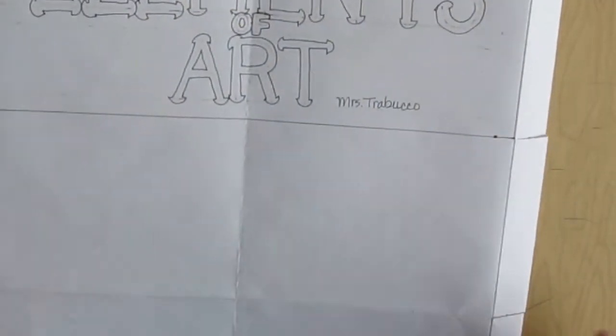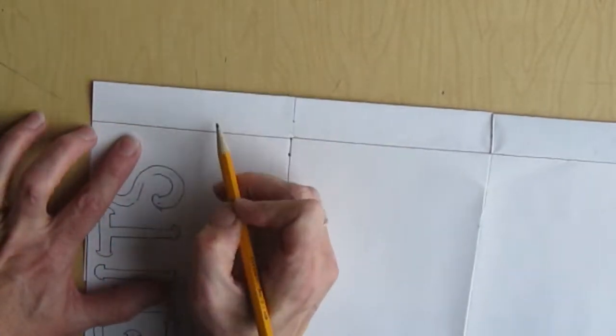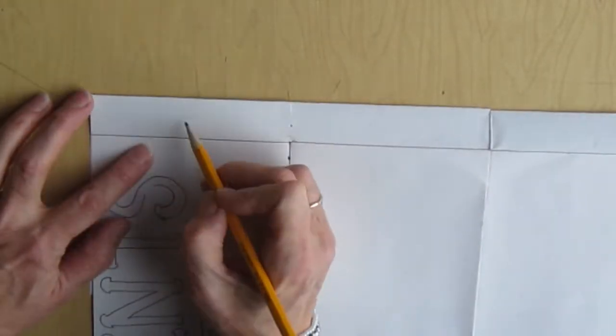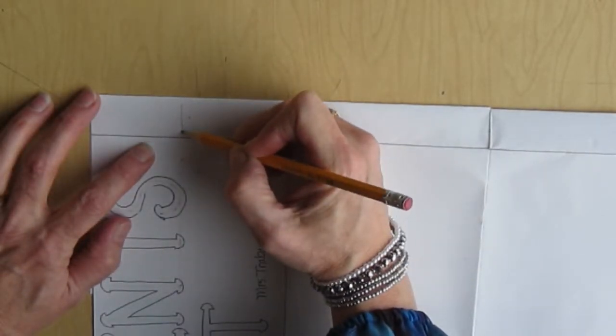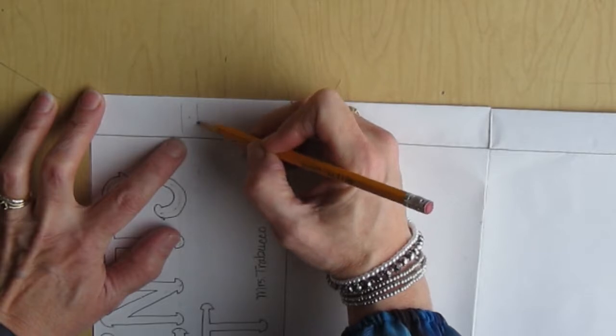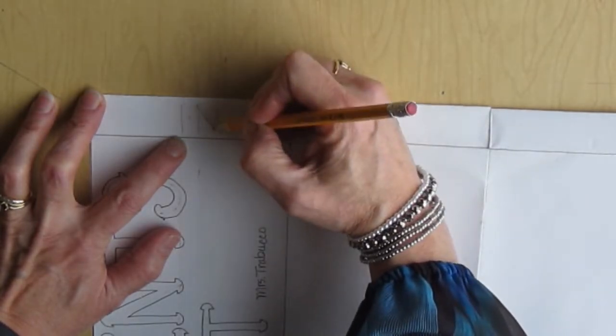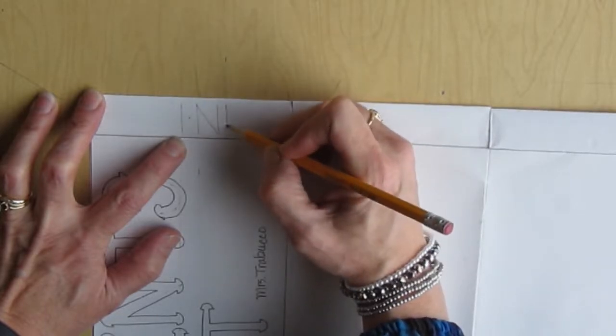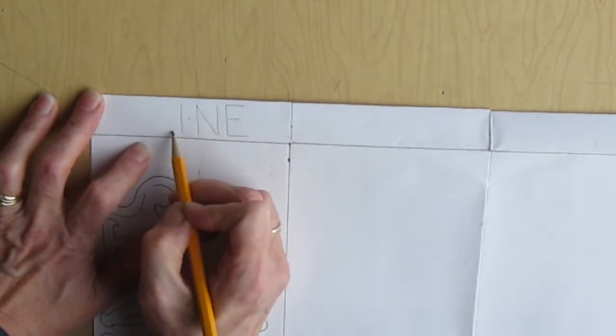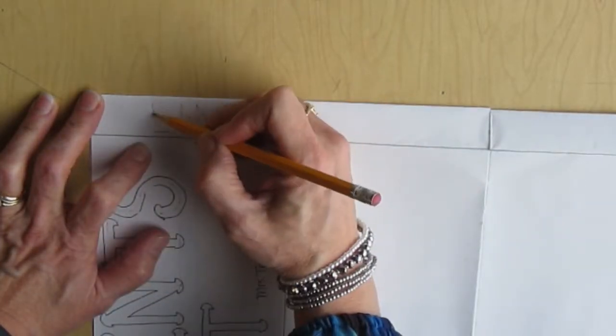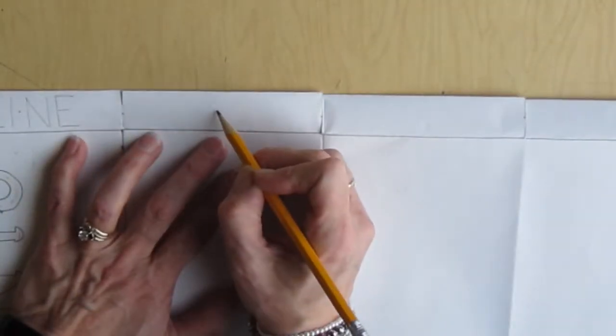And now you're going to start your labels. Turn your poster over. The title section should be on the left-hand side. Locate the center and write the word LINE in all capital letters, all the same height with the same space in between from the center of the word to the beginning and to the end. So LINE is the first one that is sharing the title section area.